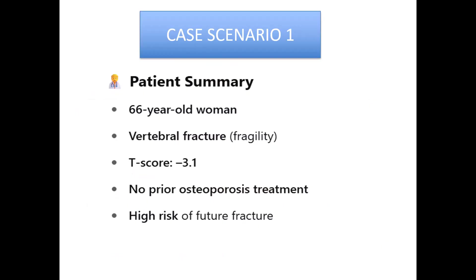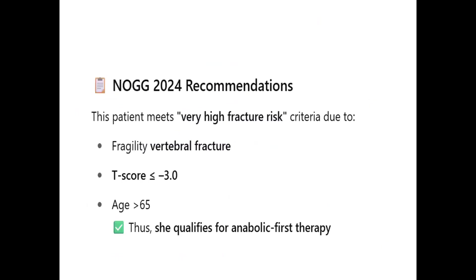Case Scenario One: a 66-year-old woman with a history of vertebral fracture — clearly a fragility fracture — and a T-score of minus 3.1, with no prior osteoporosis treatment. She is definitely at high risk of future fractures. Per NOG 2024, this patient falls into the very high fracture risk category, determined by her fragility vertebral fracture, a T-score less than minus 3, and age over 65.